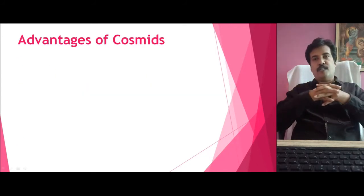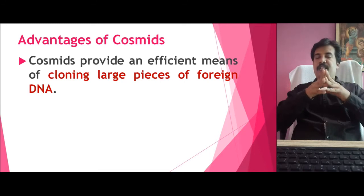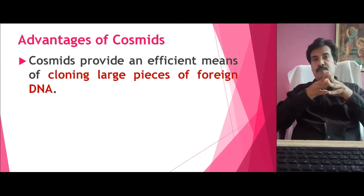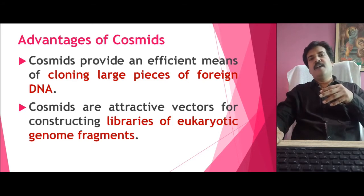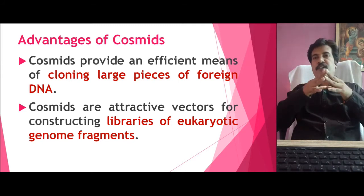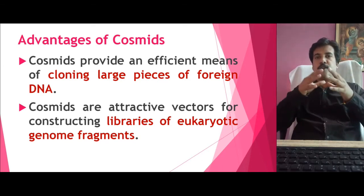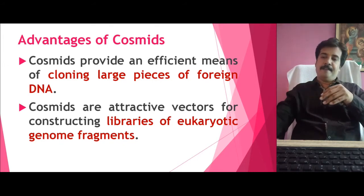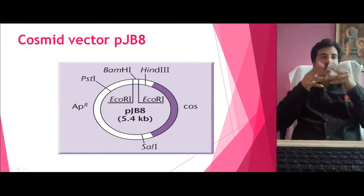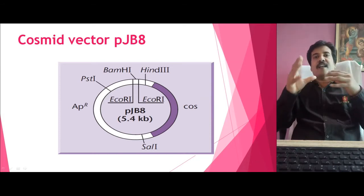Talking about the advantages of this Cosmid: as it carries both the advantages of the Plasmid and the Phage vector, the first major advantage is it can carry the cloning of a large piece of foreign DNA — up to 52 kilobase pairs can be comfortably accommodated into a Cosmid vector. Because of this large quantity of DNA that the Cosmid can accommodate, it is generally used for the construction of the eukaryotic genome. Genomic libraries of eukaryotes are generally constructed with the help of the Cosmid vector. We have basically understood what a Cosmid is — a combination of a Plasmid and a Phage vector — carrying both the benefits and how the process works.